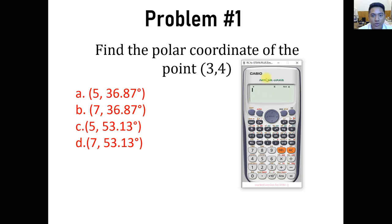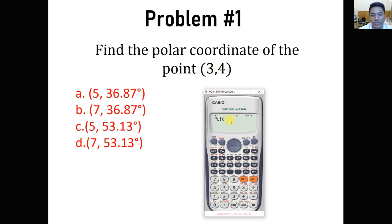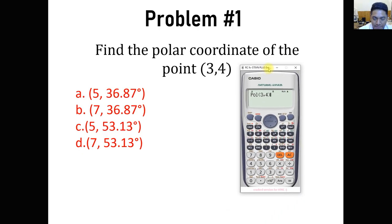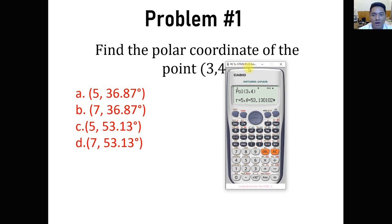The very first thing we are going to do is click Shift and then the Pol button — the plus sign — so that it shows polar. We input the coordinates: 3, comma, and 4. Once we input the values, meaning we are converting (3, 4) to polar, simply click the equal sign. Make sure your calculator is in degree mode so that theta is solved in degrees, not radians. We get r equals 5 and theta equals 53.13. The answer is letter C.